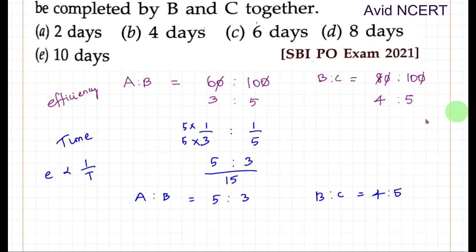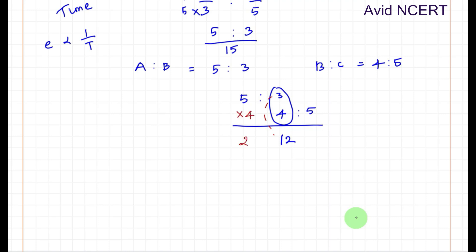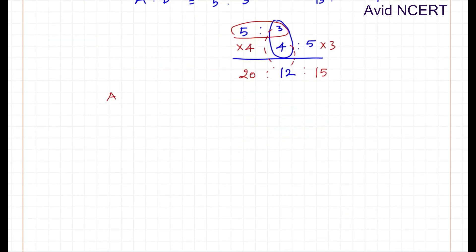Now combining the two ratios — A to B is 5 to 3, and B to C is 4 to 5 — both expressed in terms of time. To combine them, we find the LCM of 3 and 4, which is 12. Multiply A to B by 4: 5×4=20 and 3×4=12. Multiply B to C by 3: 4×3=12 and 5×3=15. So the combined time ratio A to B to C equals 20 to 12 to 15.